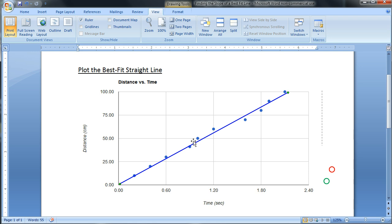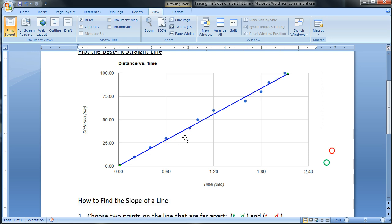So there's our best fit straight line that represents all our data points. Once you have the line, we're going to forget about the points. The line represents all the points if there is no random error.